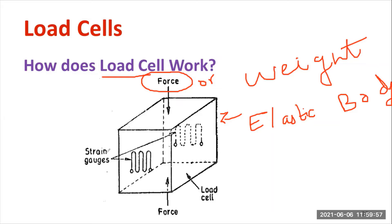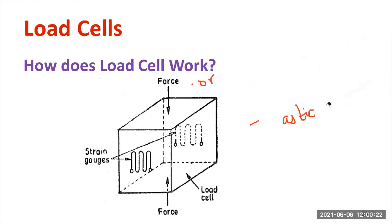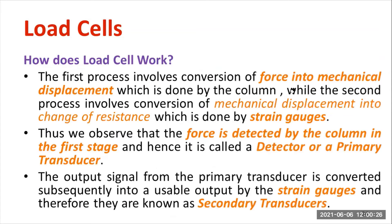Any type of strain gauge can be used, but bounded type is normally preferable. With the help of this strain gauge, whatever displacement or strain is developed from the elastic body, that is converted into electrical resistance. Therefore, you can measure force in terms of electrical resistance. That is the speciality of a load cell — it is a secondary transducer, not a primary transducer.